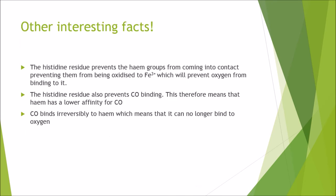A few additional facts about hemoglobin: the histidine residues prevent the heme groups from coming into contact with each other, which prevents the iron from oxidizing to Fe3+, which would prevent oxygen from binding. Histidine residues also reduce the affinity of the heme group for carbon monoxide. However, if carbon monoxide does bind to heme, it binds irreversibly, meaning the heme can no longer bind oxygen. This is why carbon monoxide poisoning is fatal — affected individuals are essentially unable to take in oxygen.